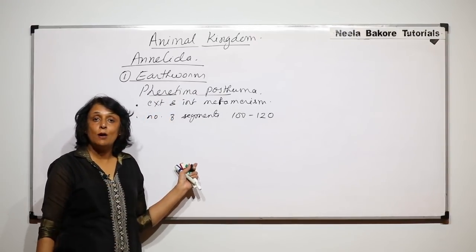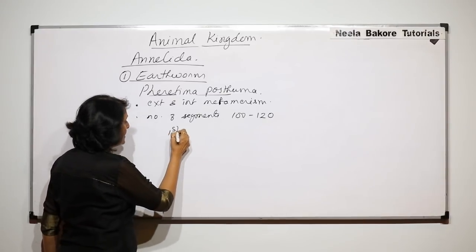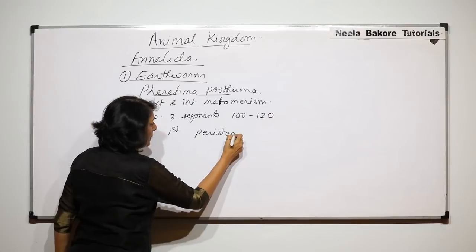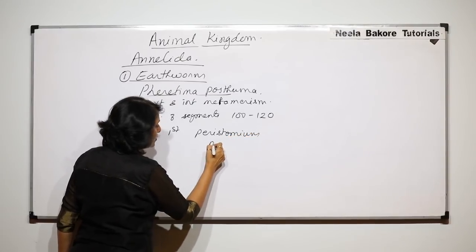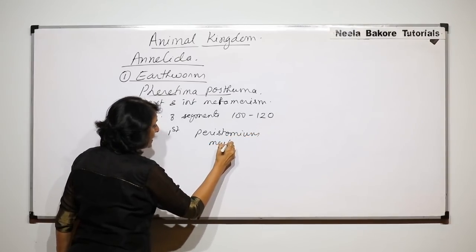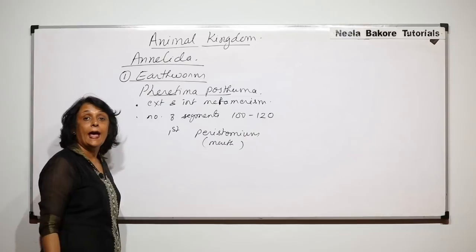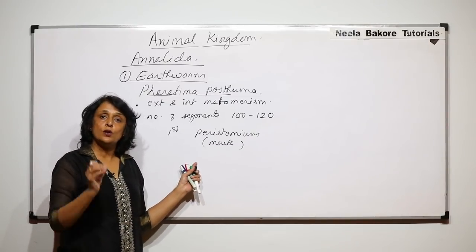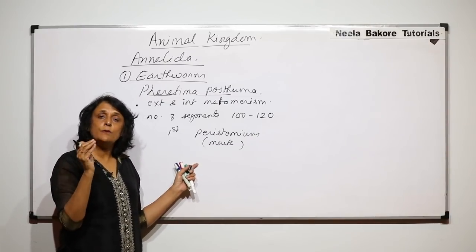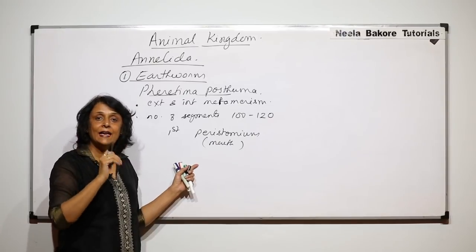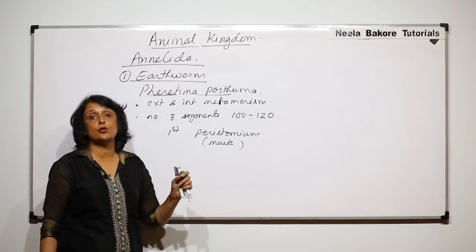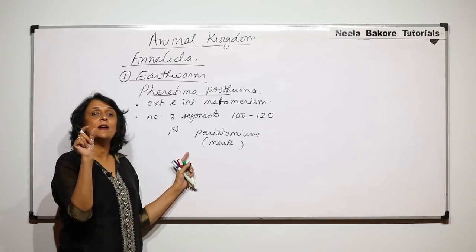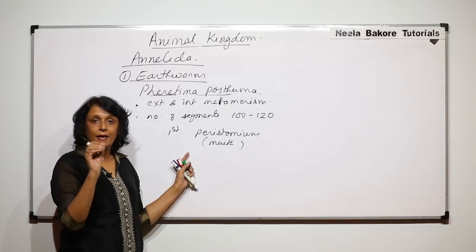The number of segments, that is the annuli or metamers, is 100 to 120. The first segment, which has the mouth, is known as the peristomium. It has the opening, that is the mouth, and in front of this there is one more structure.